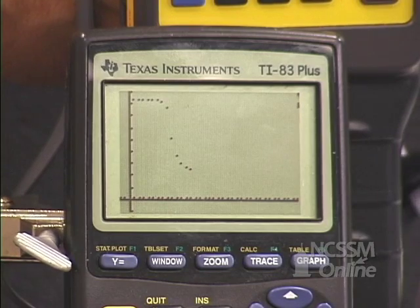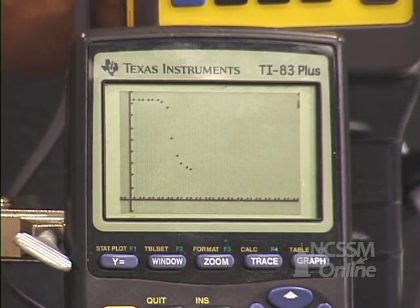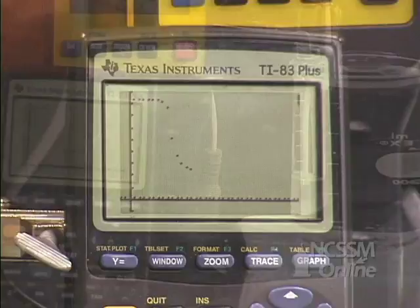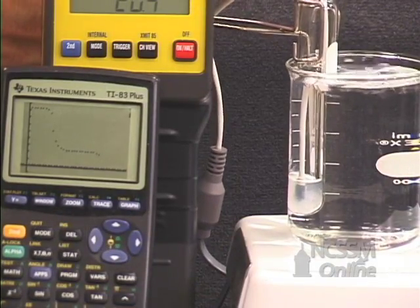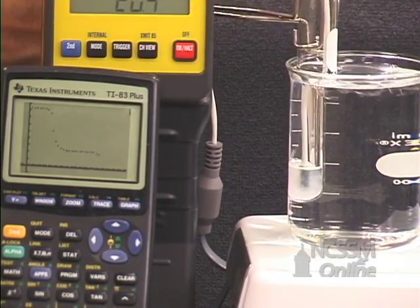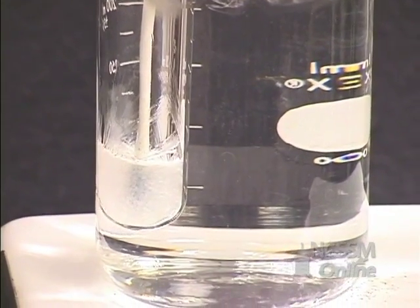As the temperature approaches the freezing point of the T-butanol, the graph starts to level off. The temperature will remain constant until all the T-butanol has frozen.